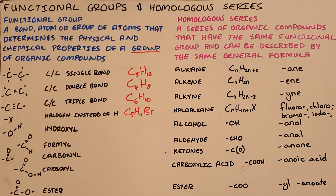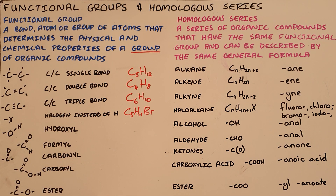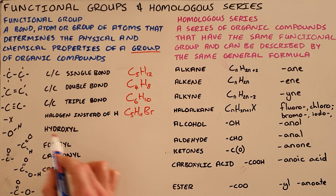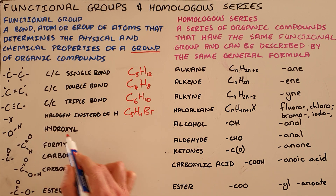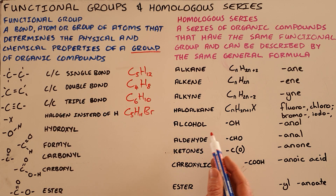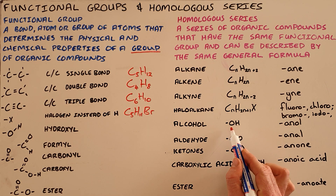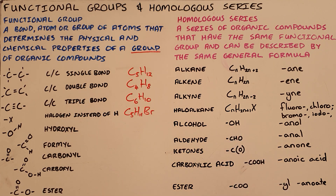The next type of functional group is known as the hydroxyl group — that is an oxygen single bonded to a hydrogen. Any compound that contains this hydroxyl group belongs to the homologous series of the alcohols, and would therefore get the suffix -anol. In condensed structural formula, it is represented as OH.